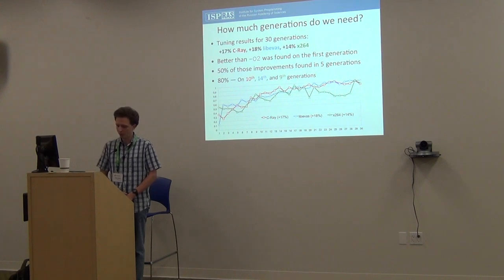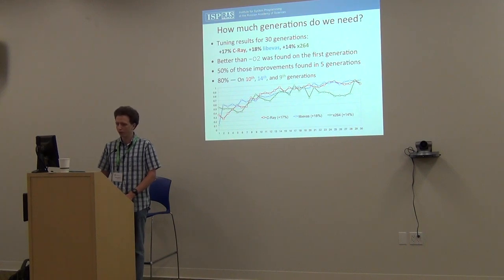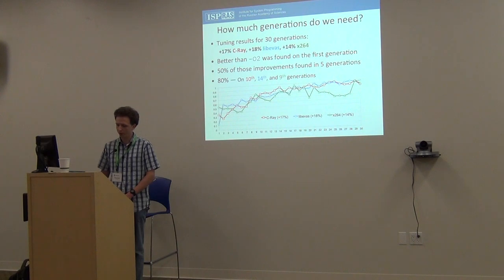This shows the maximum performance found for each generation for three applications. For those better than O2, improved performance was found even in the first generation, and 50 percent of improvement was found in just five generations — so it's quite quick to find something better than O2.